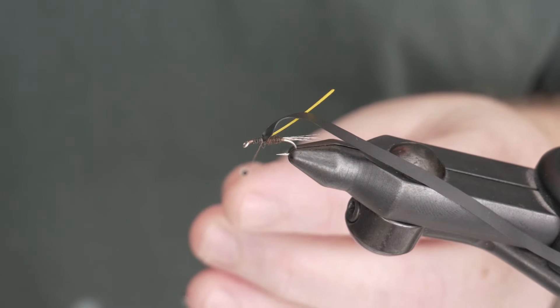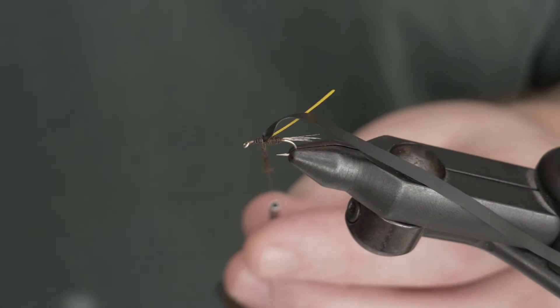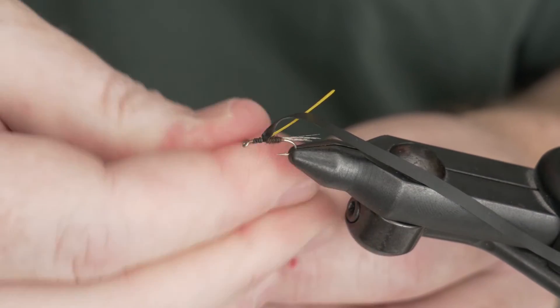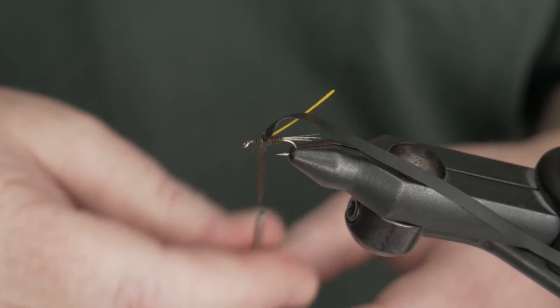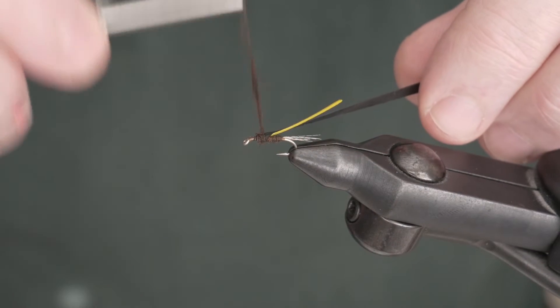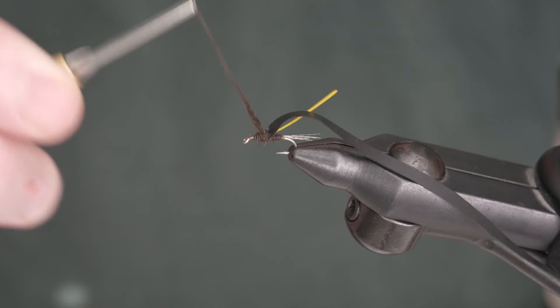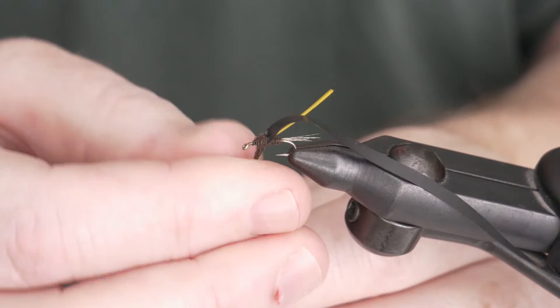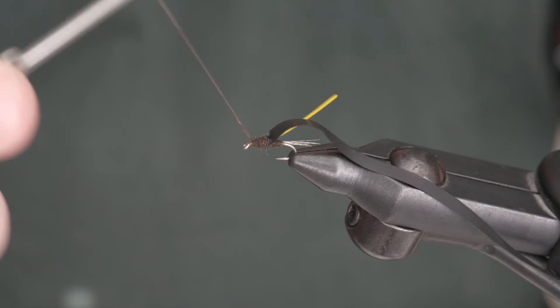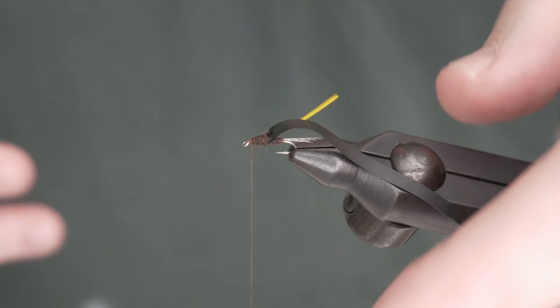Okay, so now that we've got our yellow goose biot in and our wing case, we're going to go ahead and use the same dubbing that we used on the body, but we're going to go thorax now. Go a little thicker here, but we still want a very thinly profiled body on this fly. Be careful when you wrap this on because it's very easy to get this nymph skin to push on the opposite side of the hook. So that's looking good there, let me just get it up to the front of the hook. You're going to need to leave yourself a little extra room here, a little more than you normally would, I think.